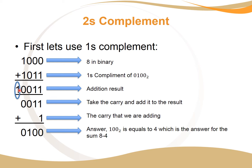This is our addition result. In ones complement, if we have a carry, we add the carry back to the result. So we have a carry and another carry, giving us 100. The answer is 0100, which is binary for four. So by only doing addition, we have subtracted eight minus four.